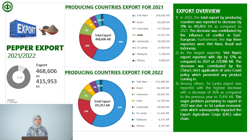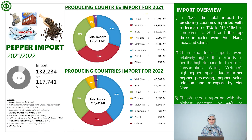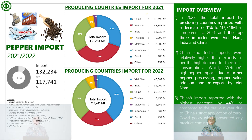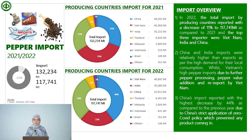The major problem pertaining to exports in 2022 was Sri Lanka's economic crisis which impacted the export agriculture crop value chain. In terms of pepper import overview in 2022, total imports by producing countries decreased by 11% to 117,741 metric tons as compared to 2021. The top three importers were Vietnam, India, and China. China and India imports were relatively higher than exports due to high demand for local consumption, while Vietnam's high pepper imports were due to further processing, value addition, and re-export. China's import reported the highest decrease of 44% due to its strict zero-COVID policy.